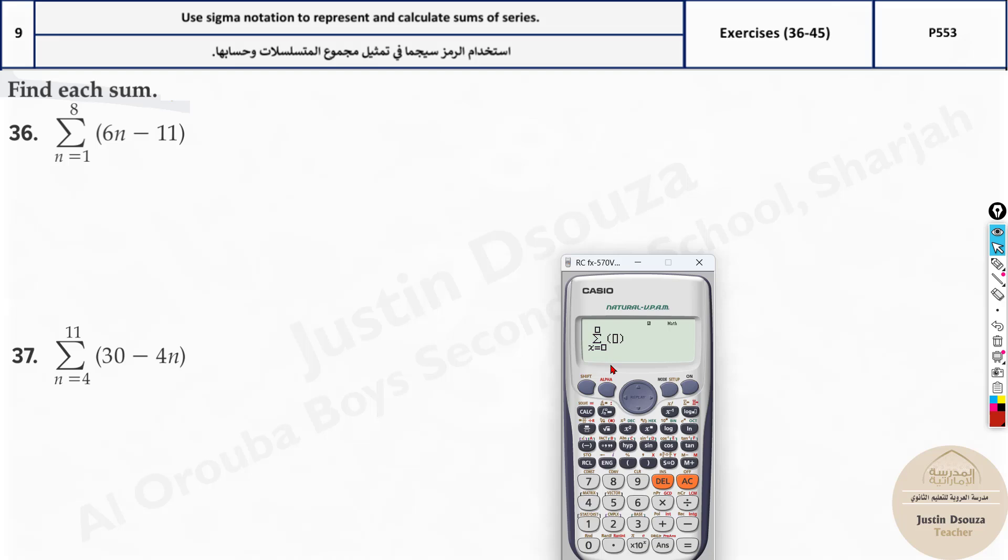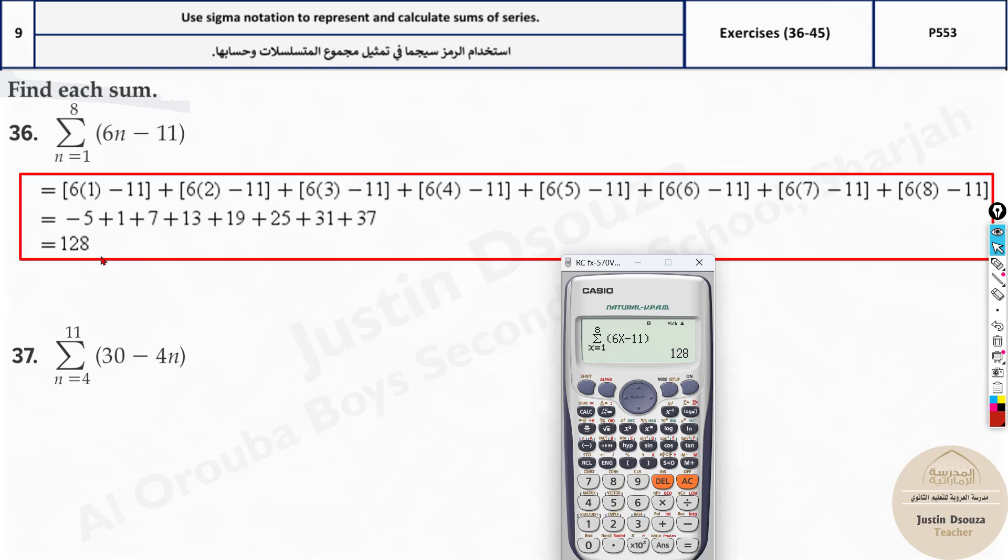Now here you don't have the option of n, it's in terms of x as the variable, so type it out: 6x minus 11. And where does it start? From 1 till 8. Press equal to, the answer is 128, so that will be the final answer.